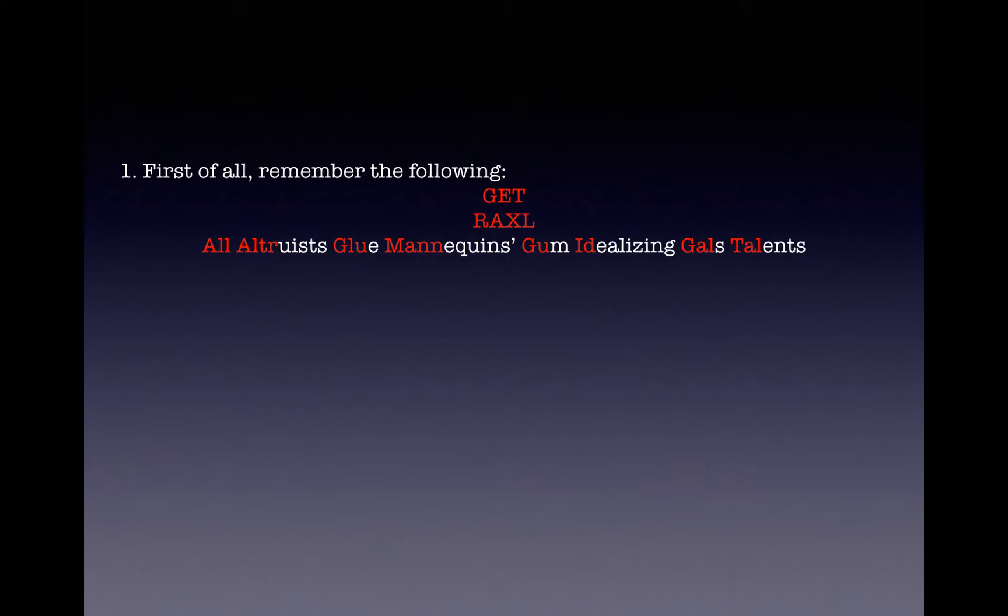Gum is gulose, idealizing is idose, gals is galactose, and talents is talose.